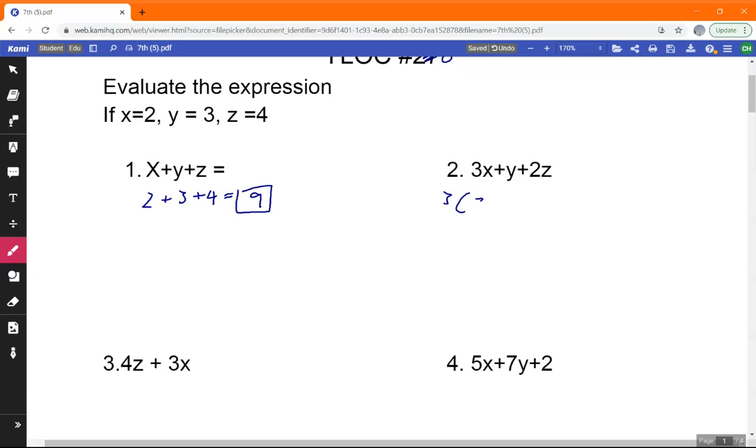3x plus y plus 2z, right? That would be 6 plus 3 plus 8, that would be 17.